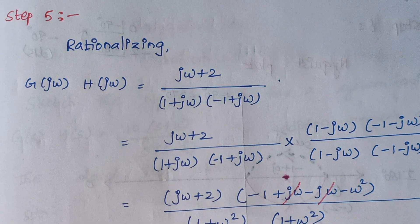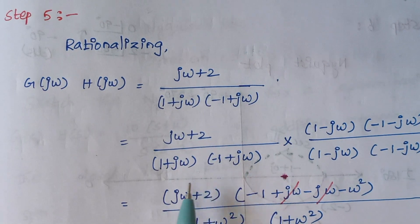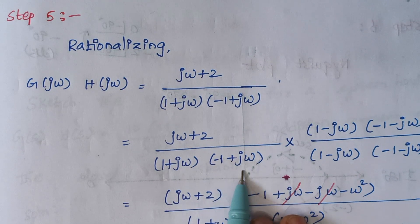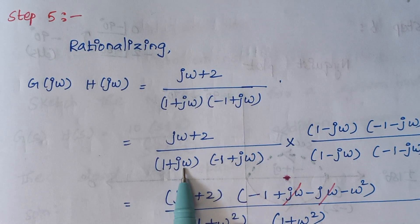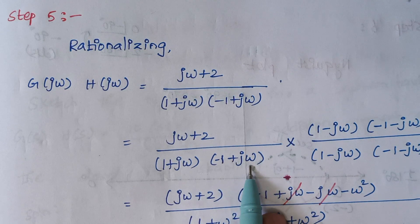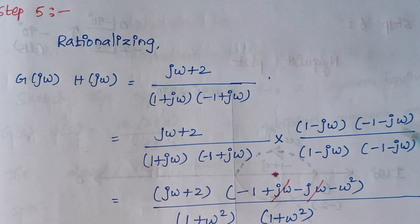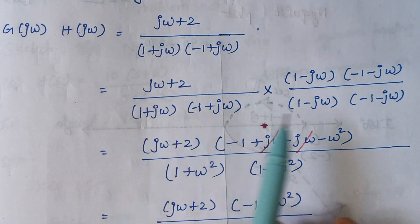Step 5 is rationalizing — that is, taking the complex conjugate for the denominator terms. In this case we have 1 plus jω and minus 1 plus jω. For 1 plus jω the complex conjugate is 1 minus jω, and for minus 1 plus jω we write minus 1 minus jω. We multiply and divide by these same terms, then combine the denominator terms.